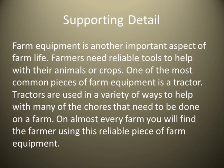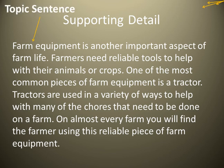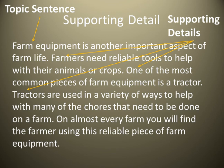Here's a supporting detail paragraph about farm equipment: 'Farm equipment is another important aspect of farm life. Farmers need reliable tools to help with their animals or crops. One of the most common pieces of farm equipment is a tractor. Tractors are used in a variety of ways to help with many of the chores that need to be done on a farm. On almost every farm you will find the farmer using this reliable piece of farm equipment.' Notice we have a topic sentence, supporting details, and a concluding sentence that relates it back to what is part of farm life.